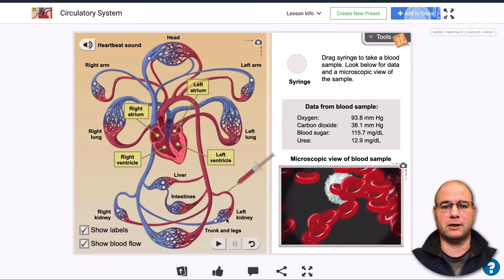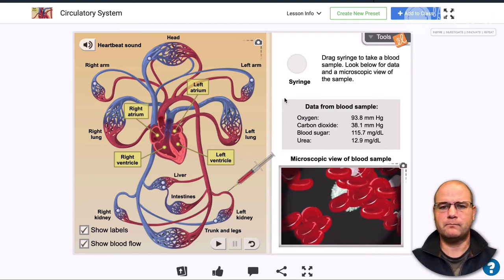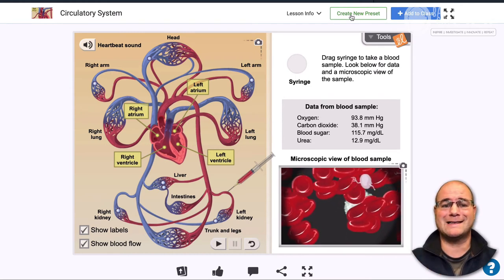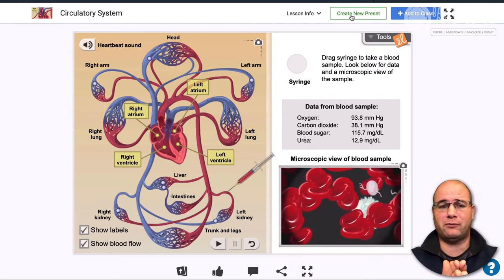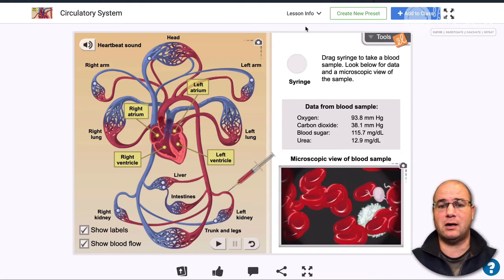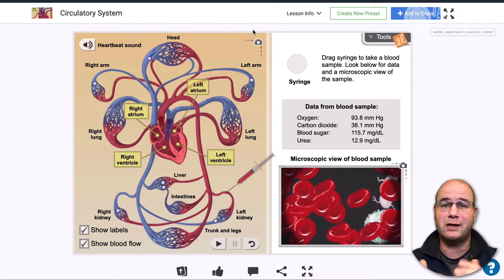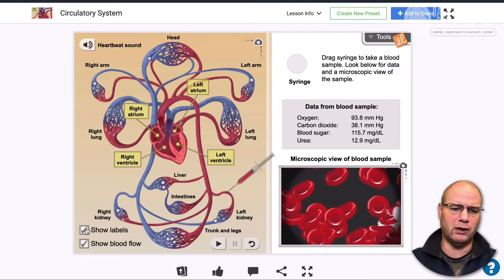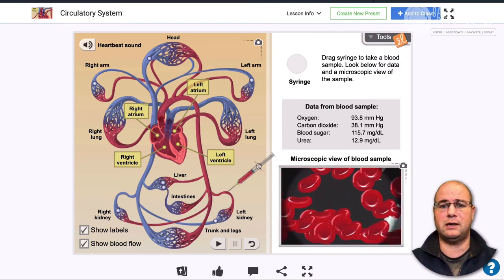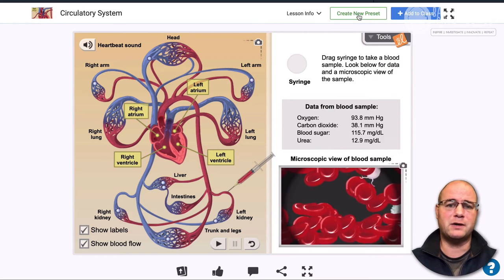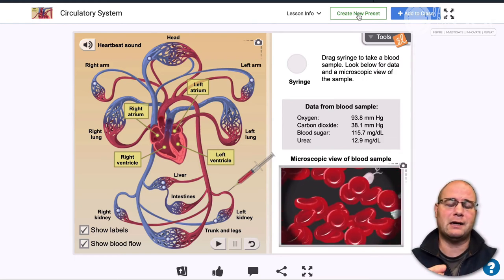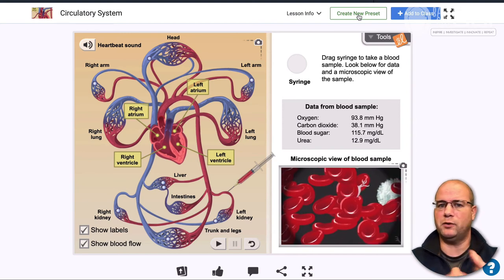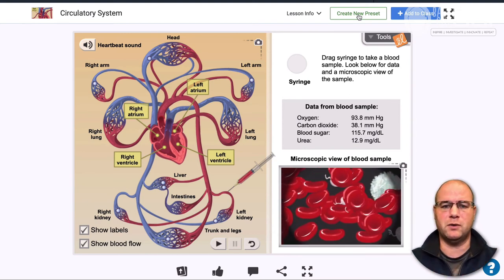Now, if you're a teacher and you want to take a look at some of the things that are in here, one other thing that you might be able to do is to create a preset. So for one particular reason, you want to set something up like this is the way I want it to look for every kid when they come in. I don't want them to have to turn on the labels and the blood flow and move the syringe to the kidney. I can go up here and create a preset. And then when I go ahead and assign that, it's going to load that particular preset of the Gizmo. And this works on almost all of the Gizmos.